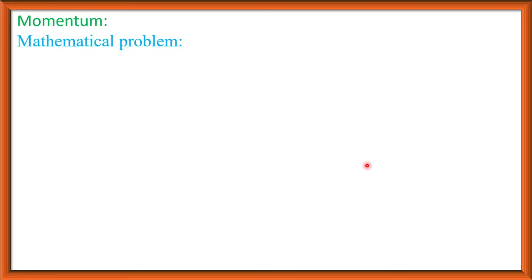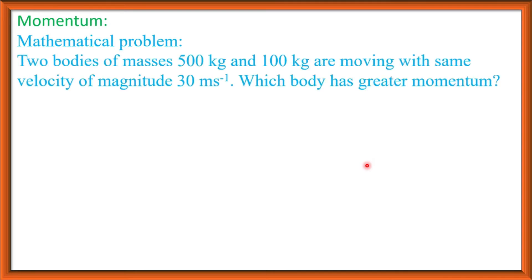Now, mathematical problem. Two bodies of masses 500 kg and 100 kg are moving with the same velocity of magnitude 30 meter per second. Which body has greater momentum? The mass of the first body is 500 kg and mass of the second body is 100 kg, and both bodies are moving with the same velocity of 30 meter per second.